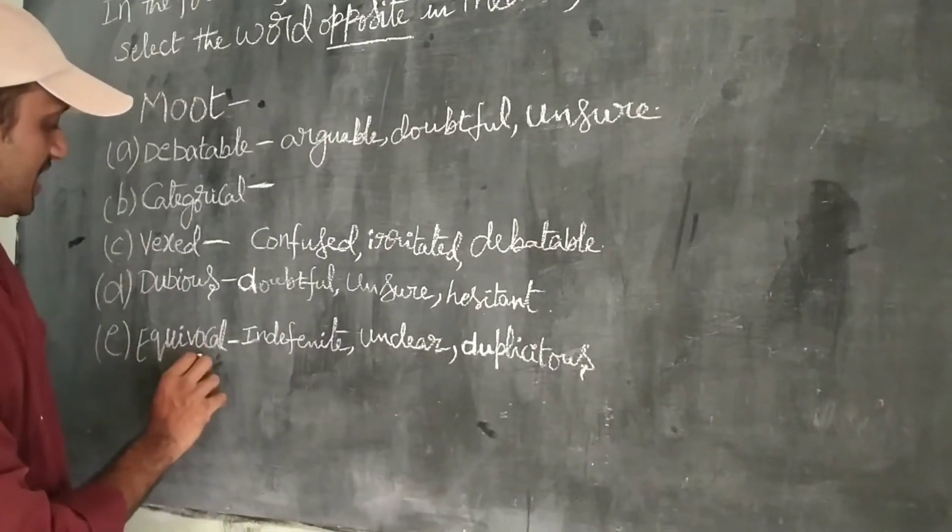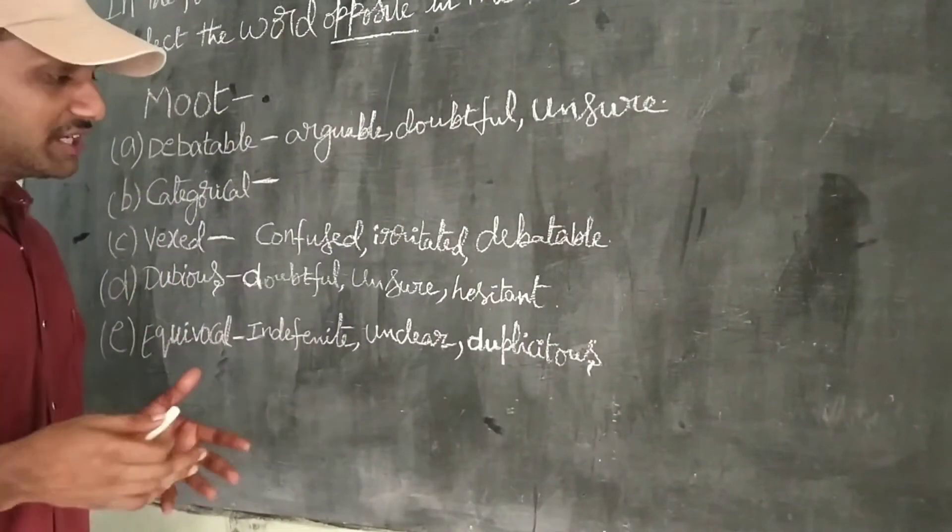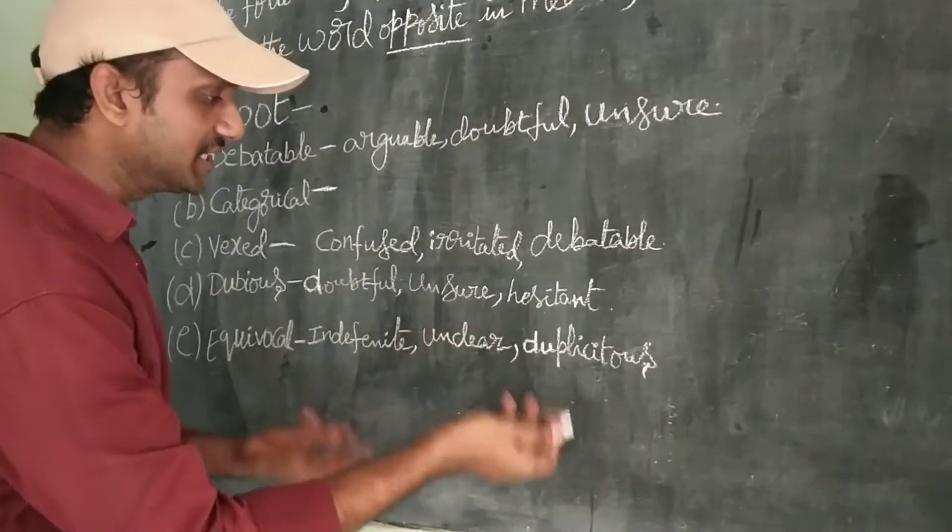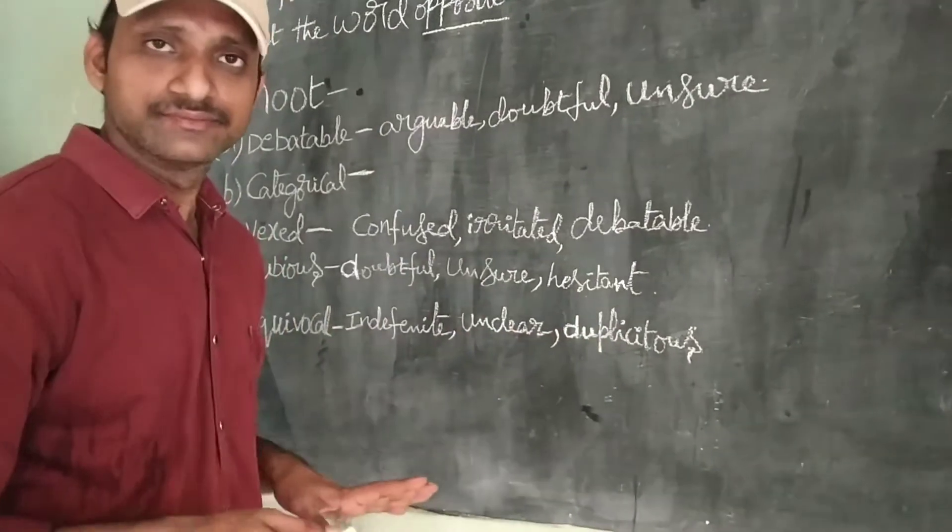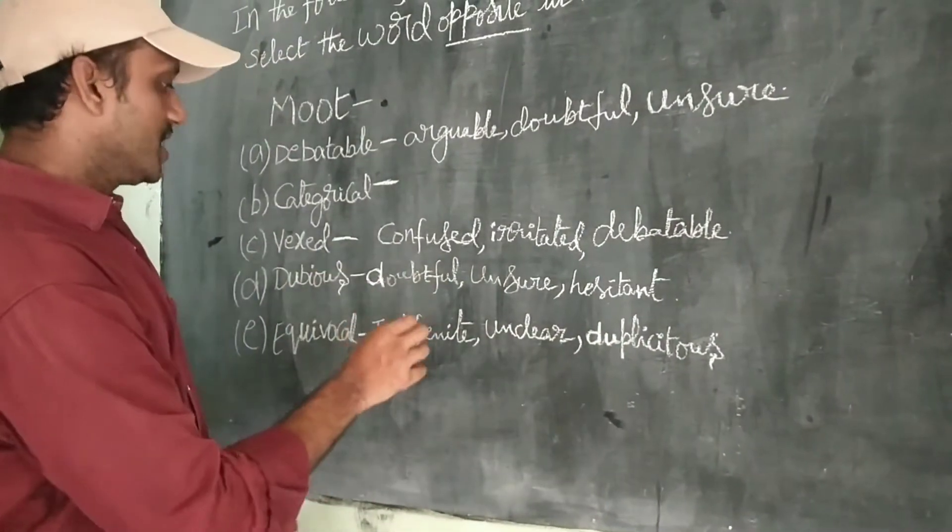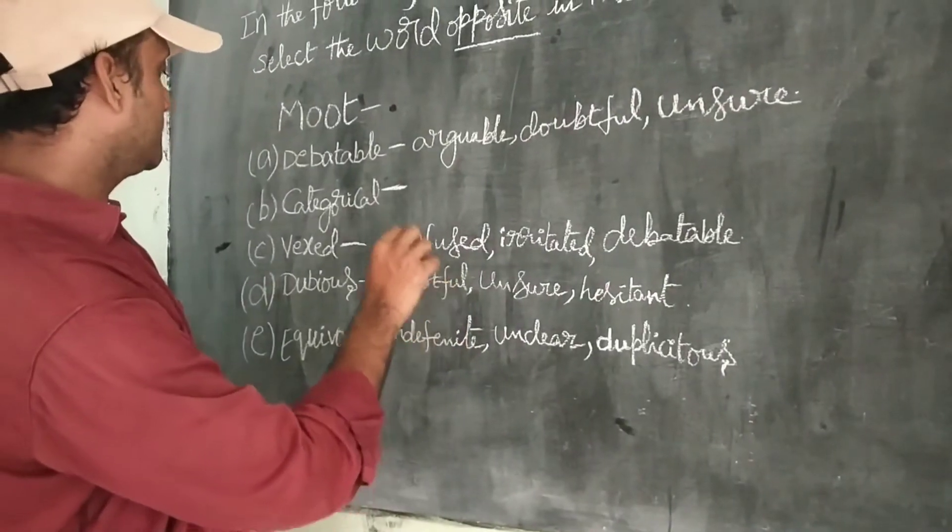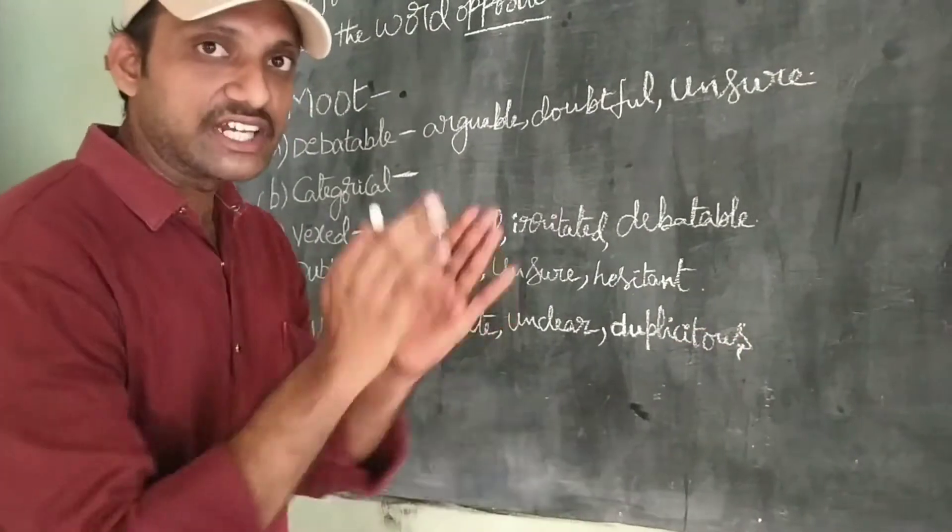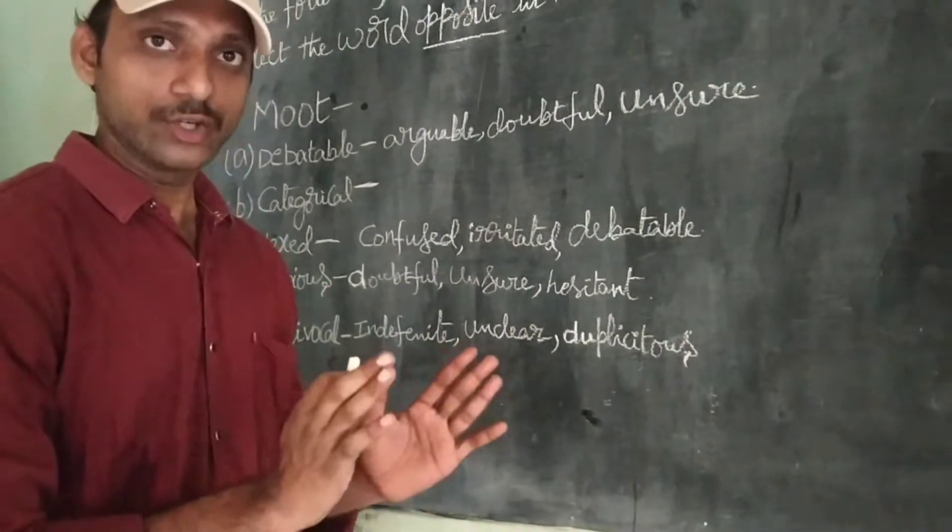Equivocal. Next one. Equivocal. In the sense, it comes under debatable. Like indefinite, unclear, duplicitous. In the sense, simply equal to dubious. Equivocal, dubious, vexed, debatable. These four are in one category.